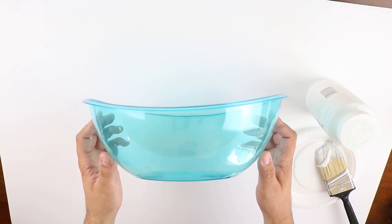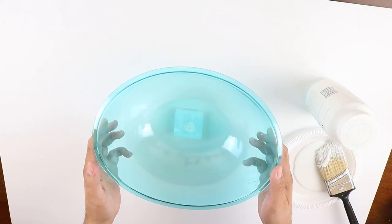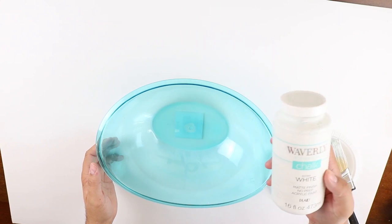For the next one, we'll use this bowl that we got from the Dollar Tree and this white Waverly chalk paint that we got from Walmart.